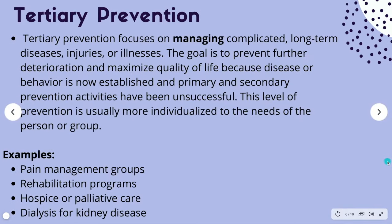The last type of prevention is tertiary prevention — the very tip of the triangle. This is when the disease or behavior has progressed, and here it's all about managing it. You want to manage the disease and focus on quality of life, managing long-term illnesses, symptoms, and injuries. The goal is to stop deterioration from progressing and maximize quality of life because primary and secondary prevention did not work.